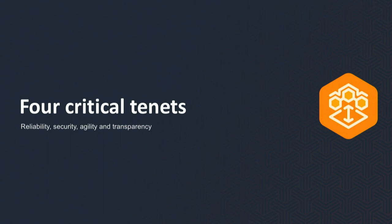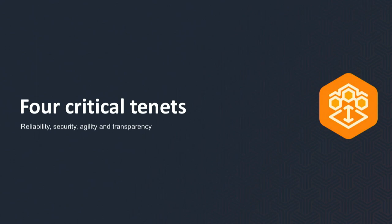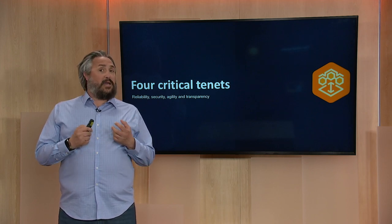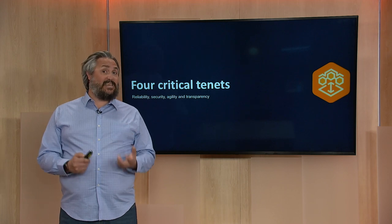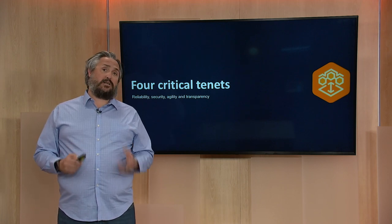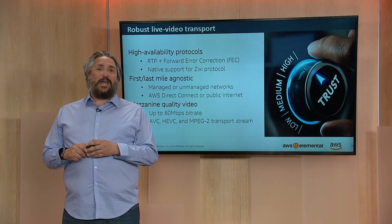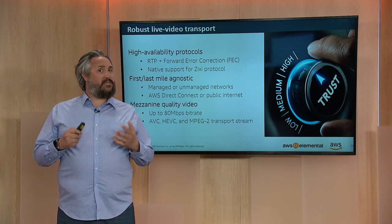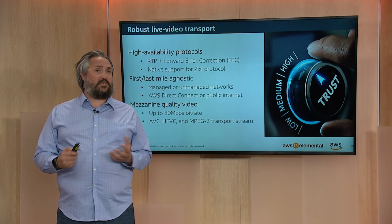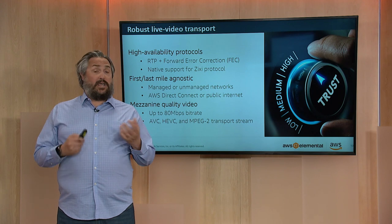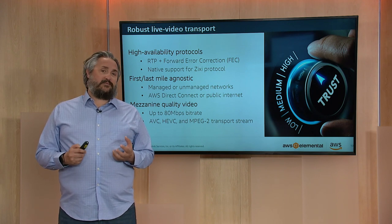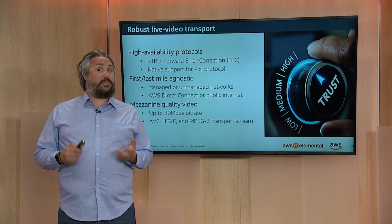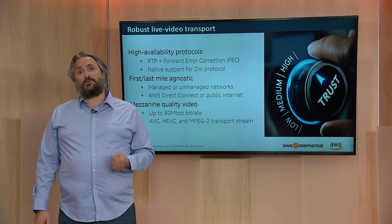For a product to be popular and successful in this space, it needs to have some qualities — what we call our critical tenants. These are things our service needs in order to be applicable for broadcast grade applications. Unsurprisingly, number one is reliability. We recognize that IP is lossy, particularly UDP IP. UDP datagrams get squeezed out in congested networks, so we need a quality of service layer on top of UDP to give customers confidence that this is acceptable for broadcast grade contribution and distribution workflows.